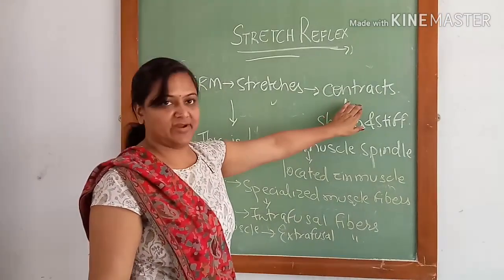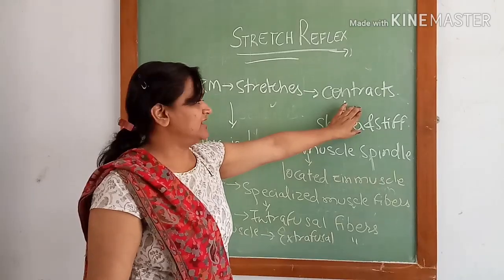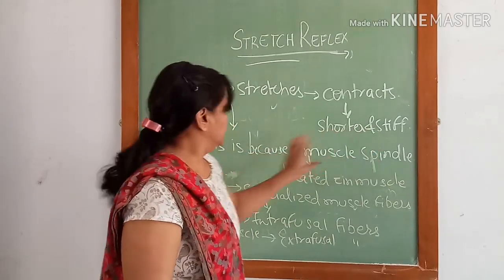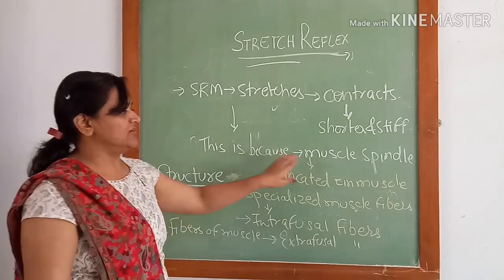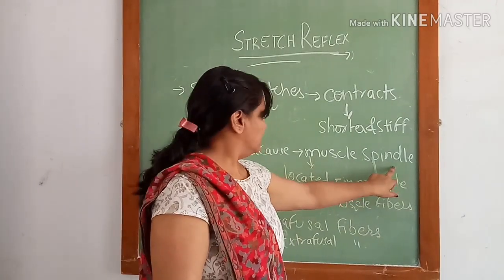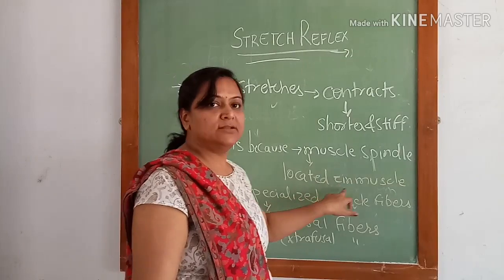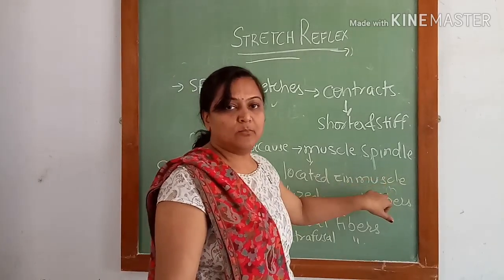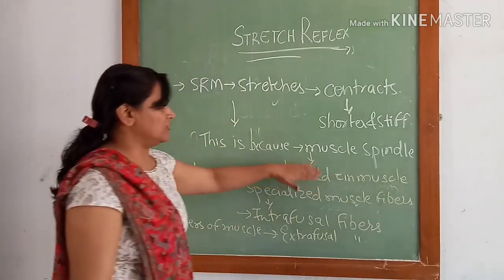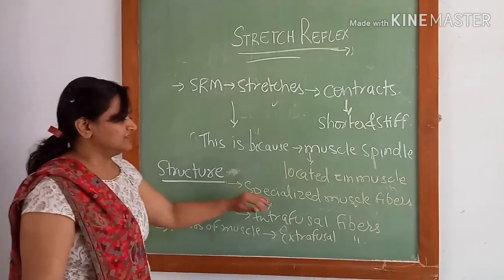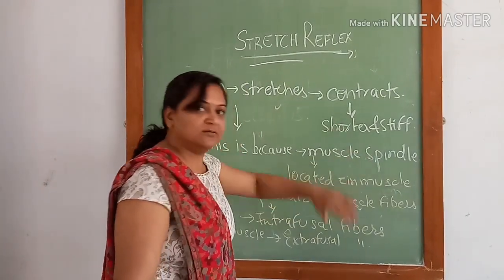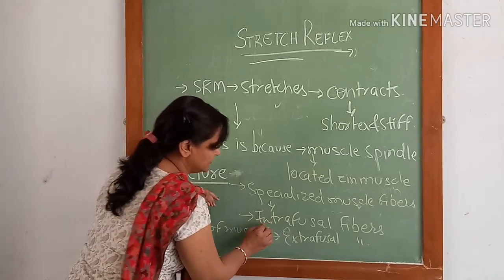Whenever a skeletal muscle is stretched, it responds by contracting and becomes shorter and stiff. This happens because it contains muscle spindles, which are located within the main muscle mass.